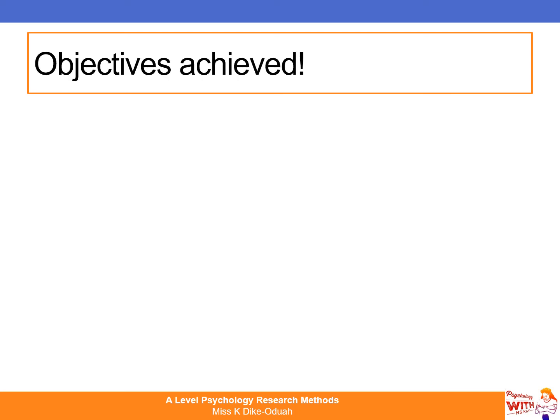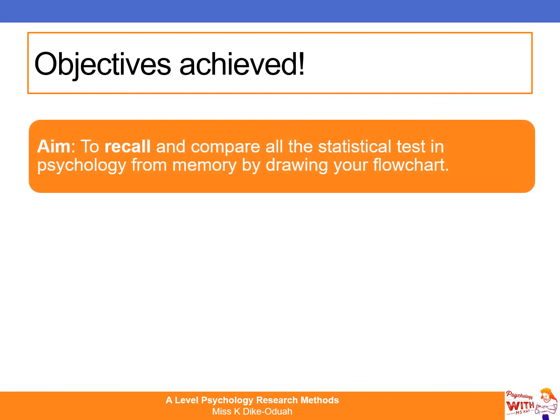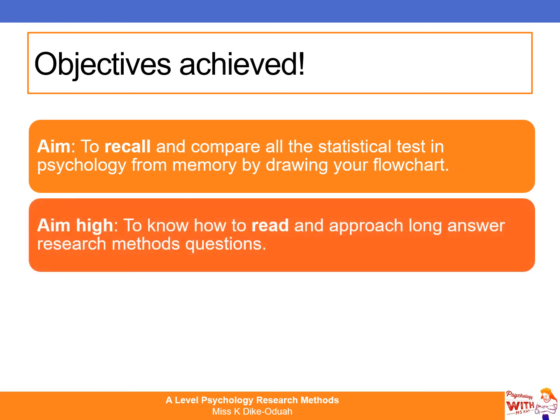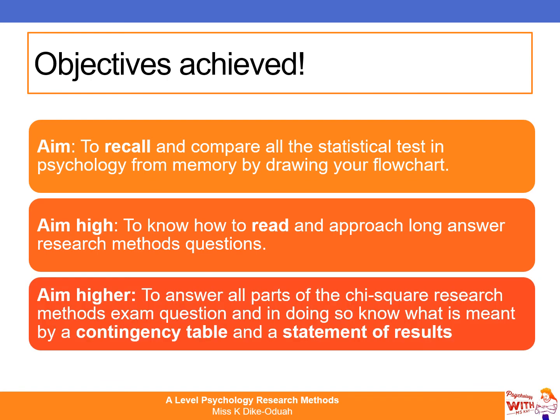Well done — we've reached the end and achieved all of our objectives. We've recalled our statistical decision flowchart, understood how to read and approach long-answer research methods questions, and answered all parts of the chi-square exam question. In doing so, we've learned about contingency tables and how to produce an excellent statement of results. If you have any questions, email me or message me on Show My Homework. Make sure you complete the exam questions I'll post there, which are solely focused on the chi-square test.